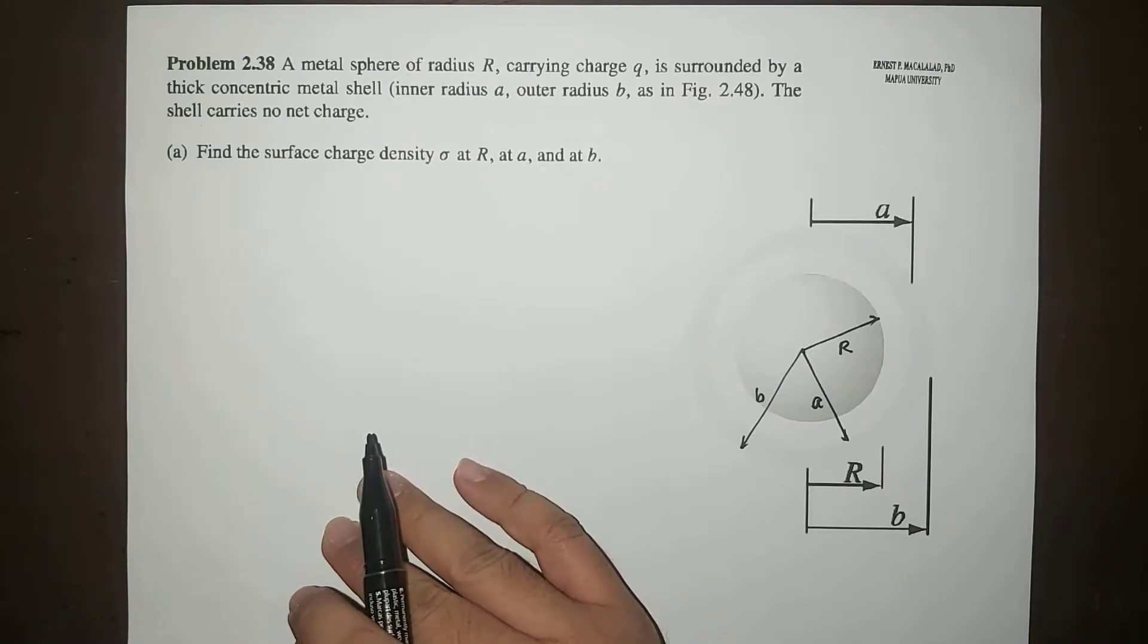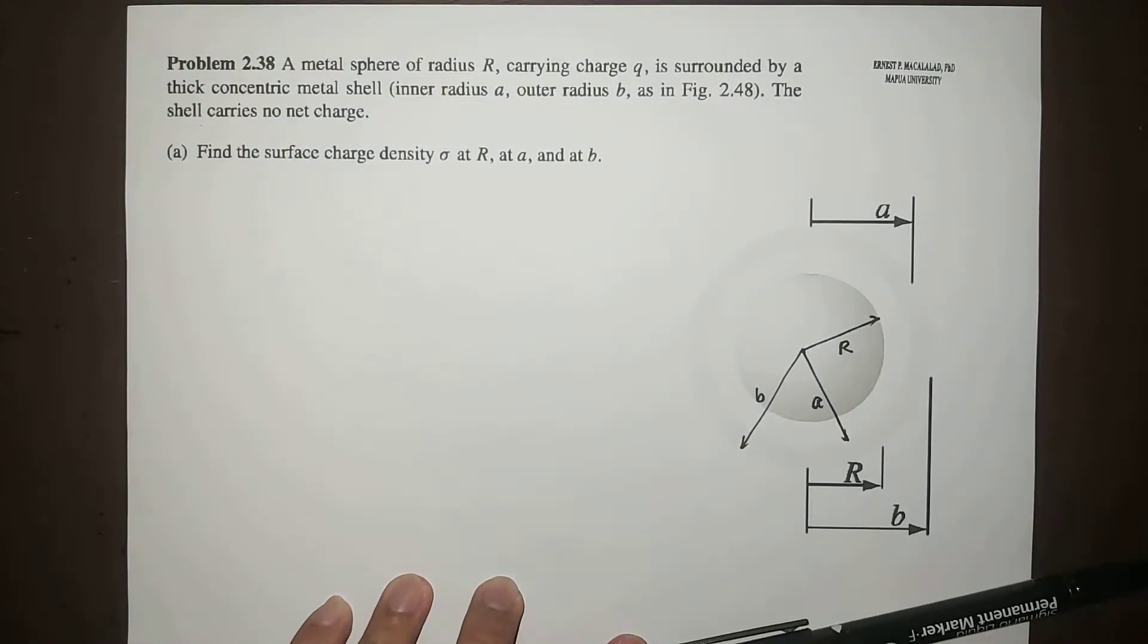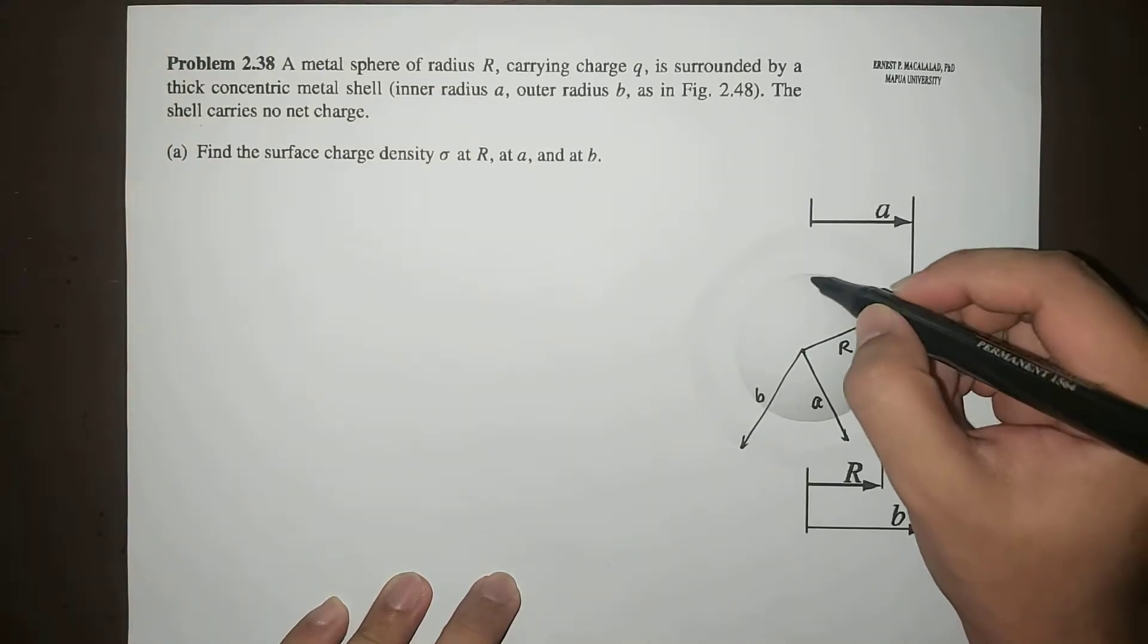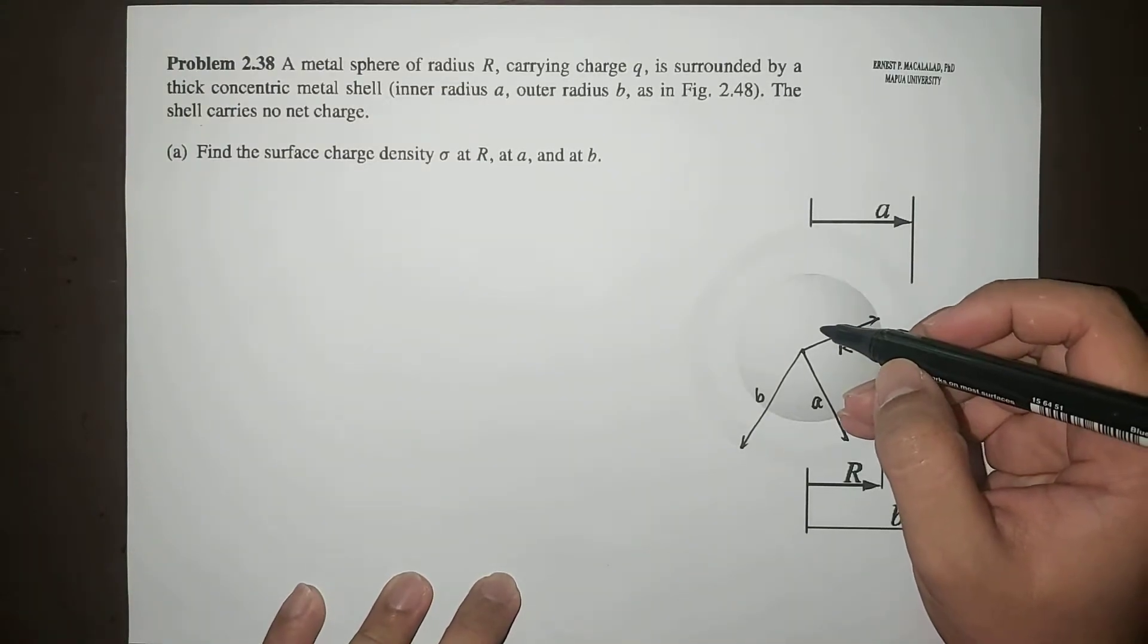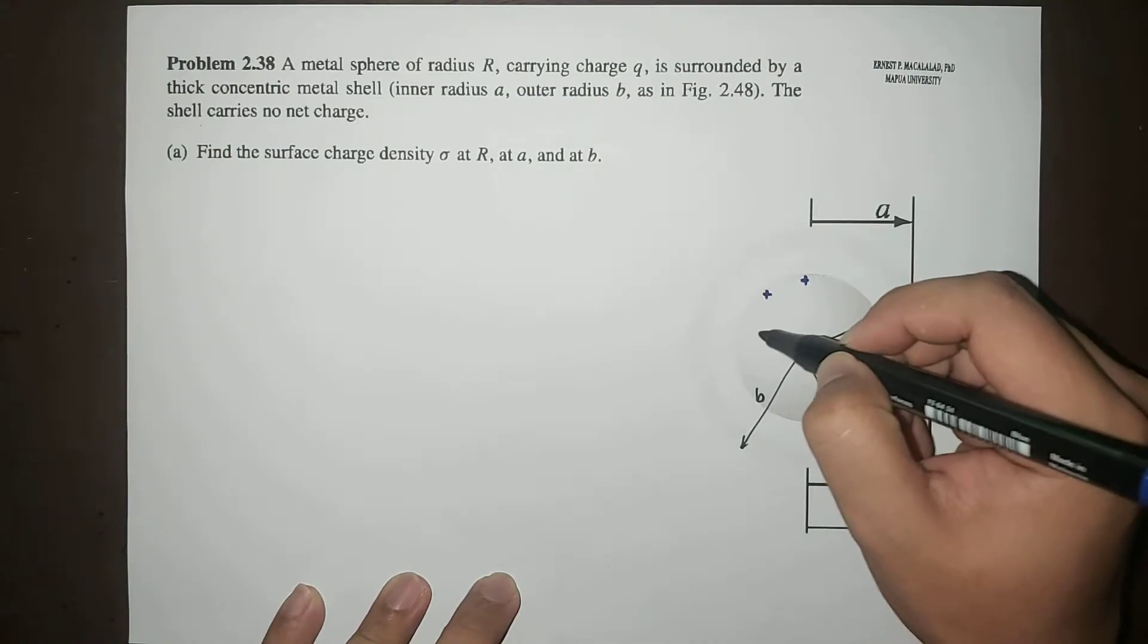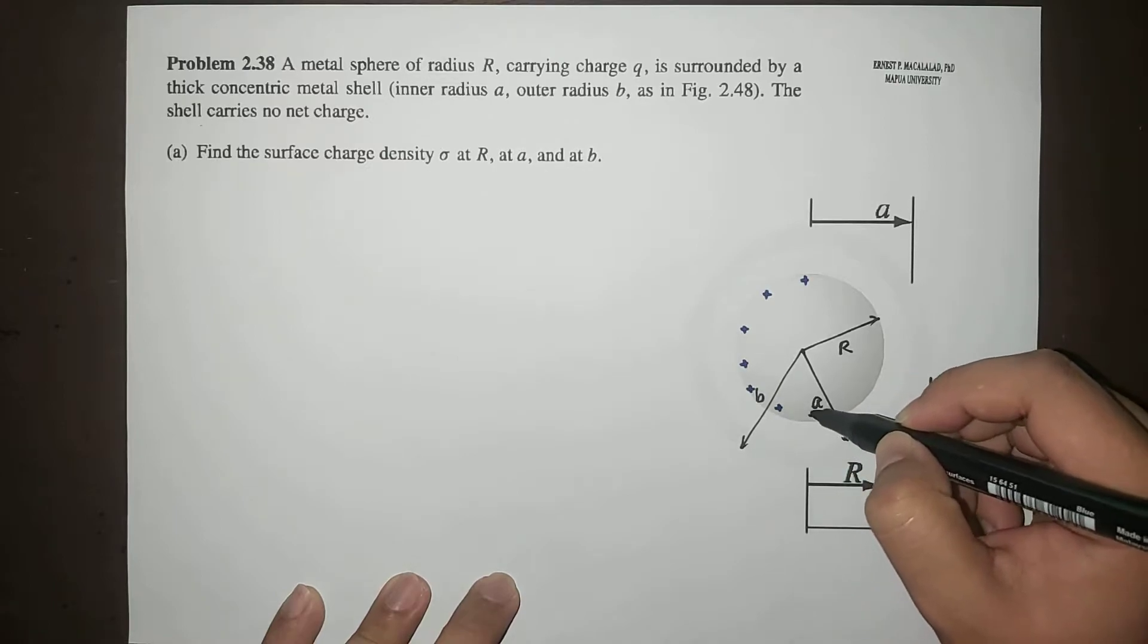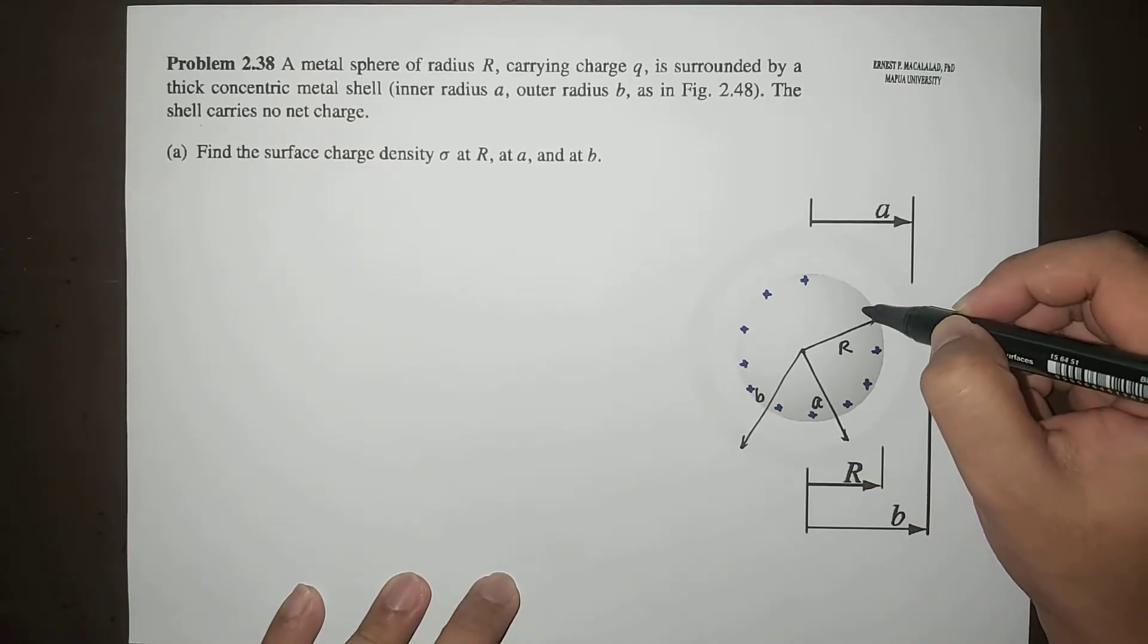Now, since the metal sphere is a conductor, that means the net charge it carries is found at the surface. If Q is positive, those charges reside at the surface because this is a conductor.